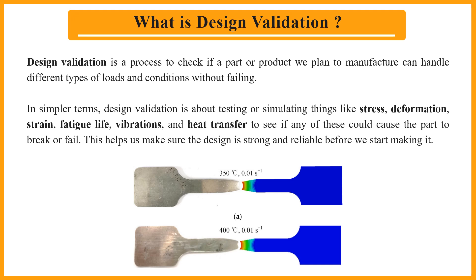So first, what is Design Validation? Design Validation ensures that the product or part we plan to manufacture can withstand different loads and conditions without failing. Think of it like stress testing a bridge to ensure it doesn't collapse under heavy traffic. For example, if you are designing a chair, Design Validation ensures it won't break under the weight of someone sitting on it. It involves analyzing stress, deformation, fatigue life, and more before manufacturing to avoid costly errors.